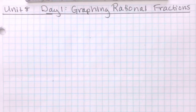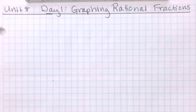Good afternoon. We are going to be taking notes on the first section of Unit 8, which is graphing rational fractions. You're going to need graph paper for the notes today, a ruler, and you might want more than one color of ink as well. So take a moment and pause the video to get your supplies so that you're ready to go.